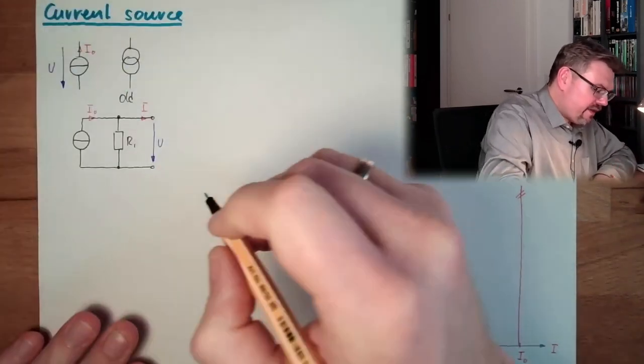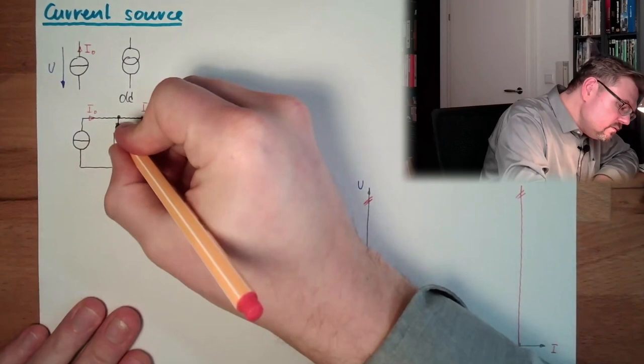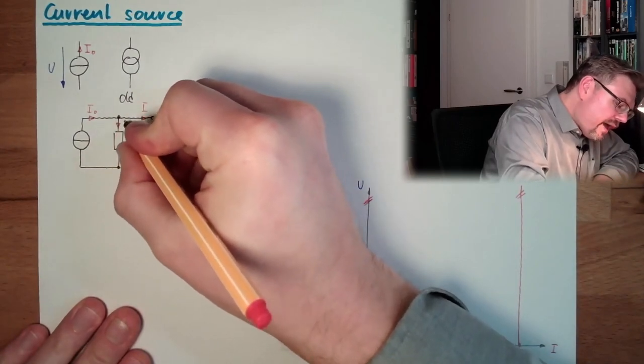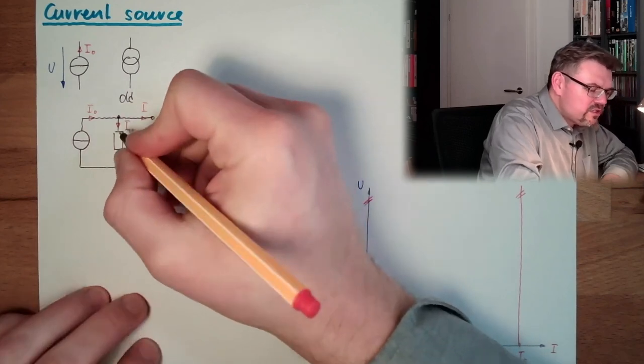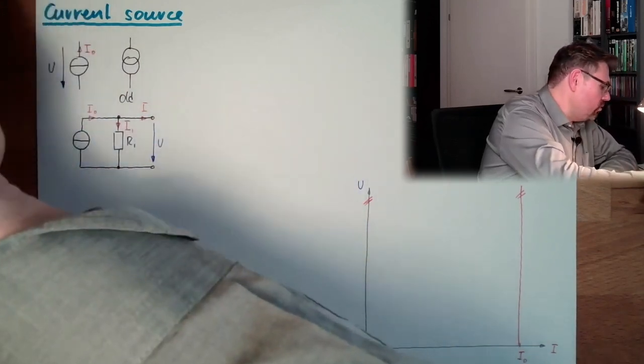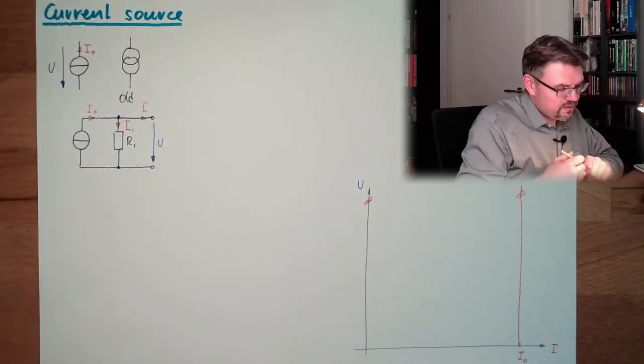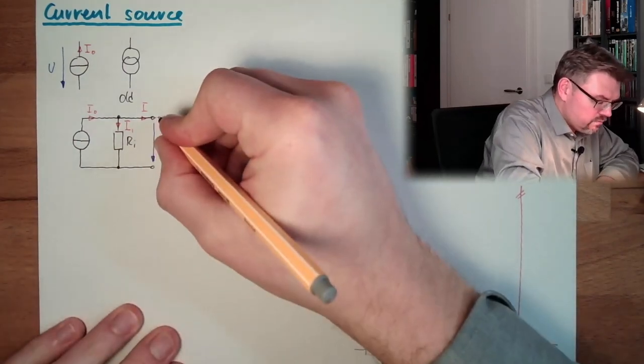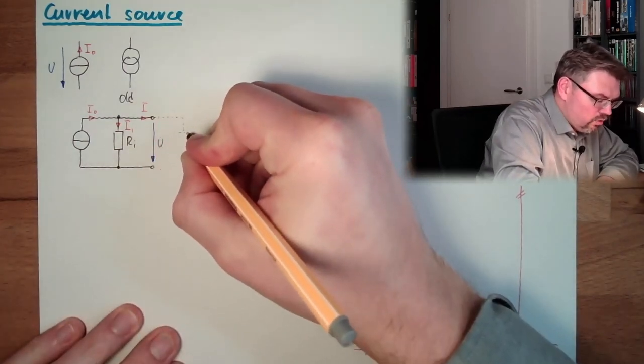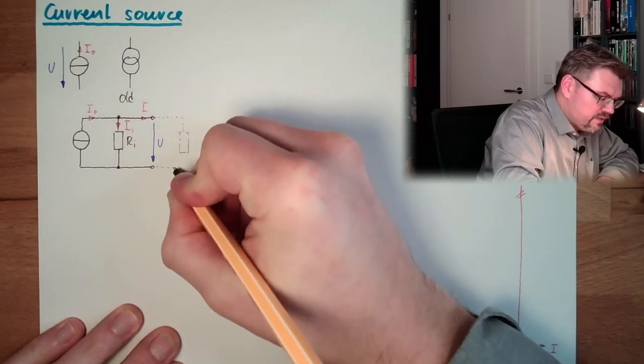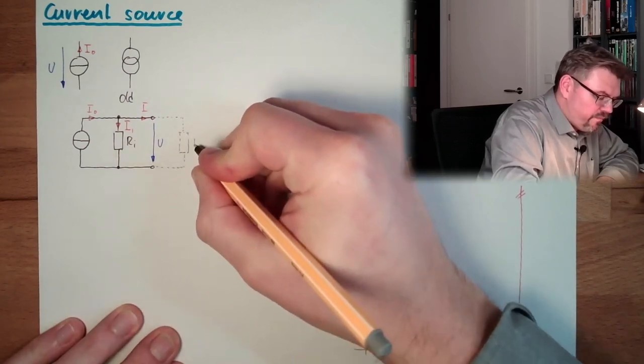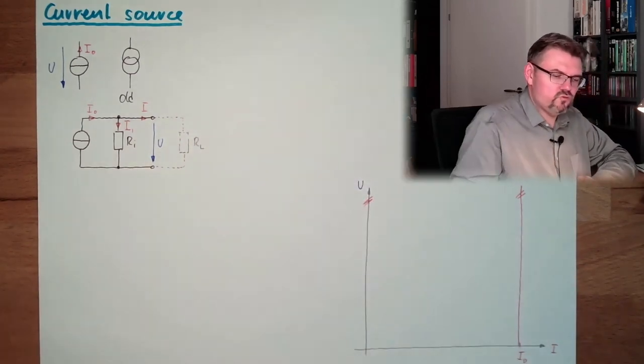And here, at our internal resistor, a part of our source current is simply bypassing the load. The load, bypassing the load, the load would be here. Here's the load. This is the load resistor here. Can be various sizes. RL, the load resistor.